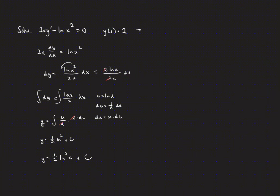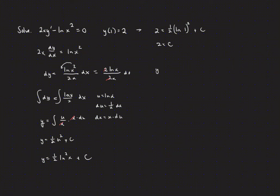Solving for c using our initial condition: plug in y equals 2, and x equals 1. We get 2 equals 1/2 times (ln 1)² plus c. The natural log of 1 is 0, so 0 squared times 1/2 is 0, which tells us c equals 2. Therefore our particular solution is y equals 1/2 (ln x)² plus 2.